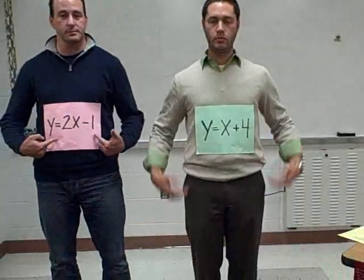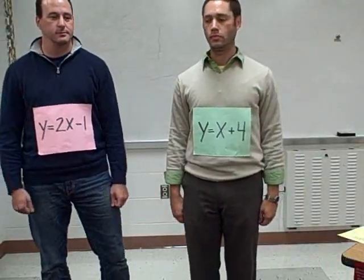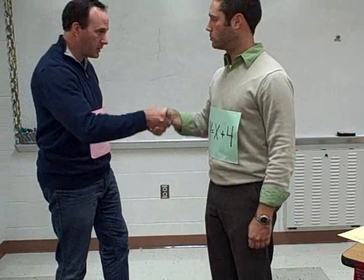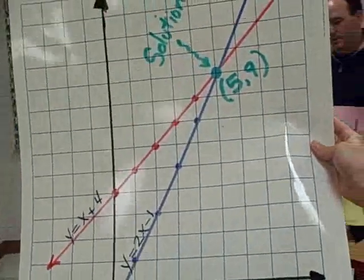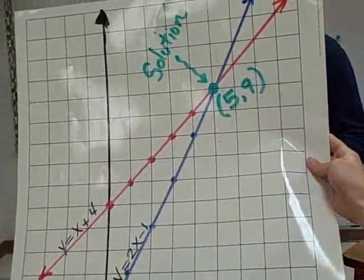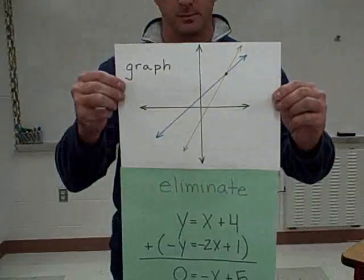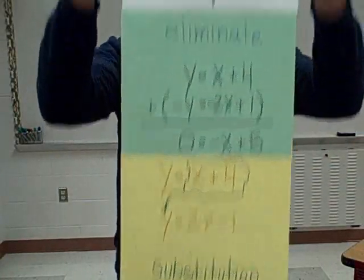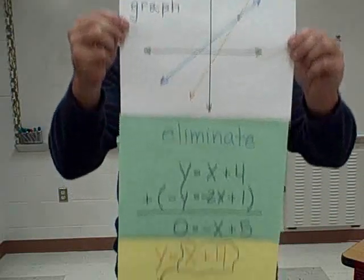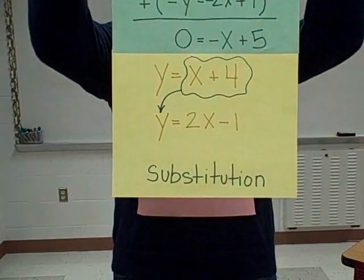For the system, take two linear equations and solve what is both true and in common. It's where they cross — the shared solution is a coordinate or ordered pair. To graph, eliminate, or use substitution.